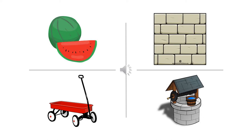So what pictures are these? W — watermelon, or we can say W for watermelon. W for wall. W for wagon. And W for wheel.